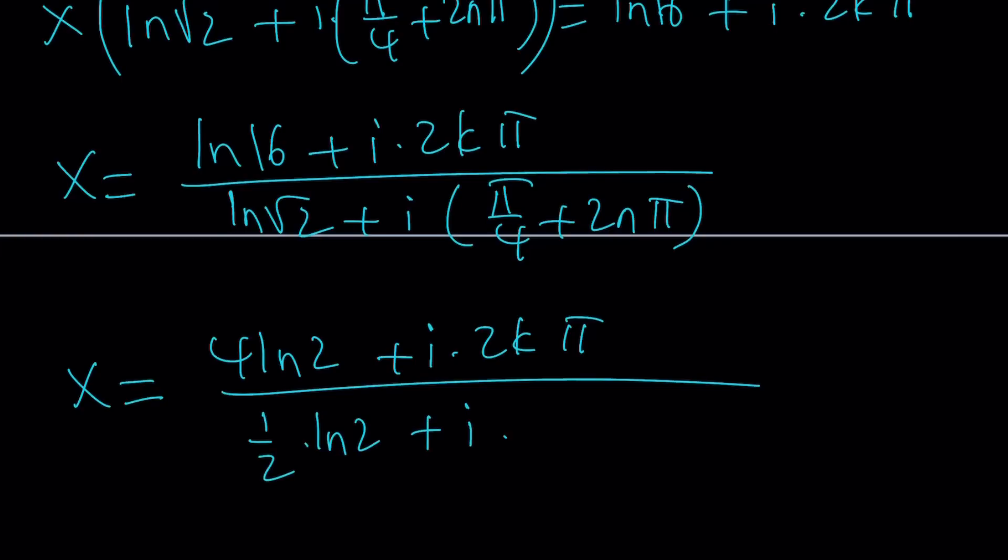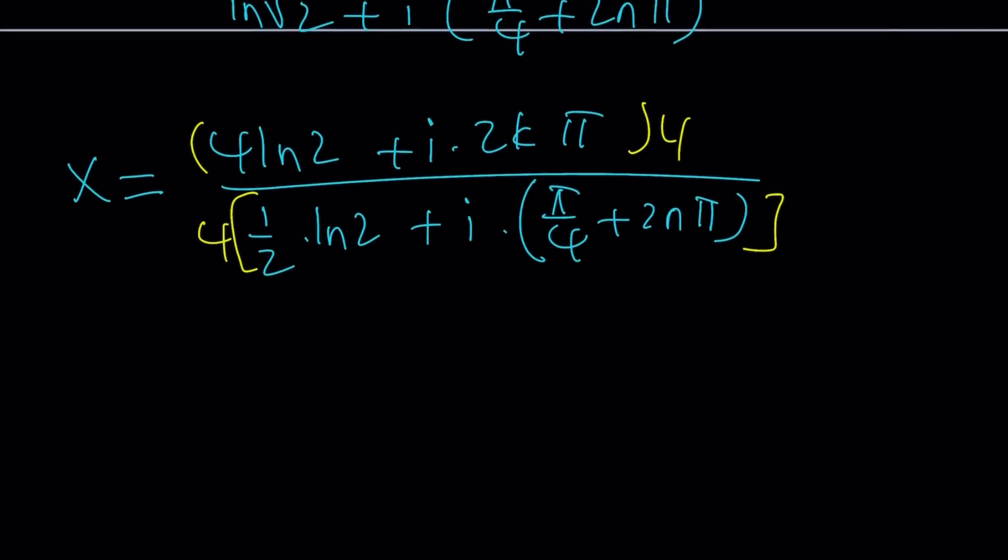Plus i times 2kπ. We can make a common denominator here, but we can also leave it like that. Next I want to get rid of the 4 at the bottom. So let's multiply everything by 4, the top and the bottom.